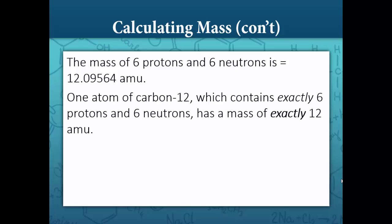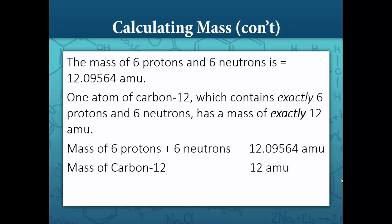However, one atom of carbon-12, which contains exactly 6 protons and 6 neutrons, has a mass of exactly 12 AMU. We calculated the mass of 6 protons plus 6 neutrons to be 12.09564 atomic mass units, but the mass of carbon-12, which is made up of 6 protons plus 6 neutrons, is only 12 AMU. The difference between these two masses is called the mass defect, which in this case is 0.09564 AMU.